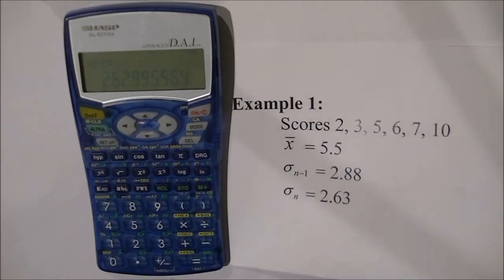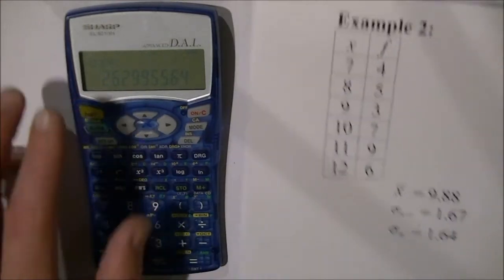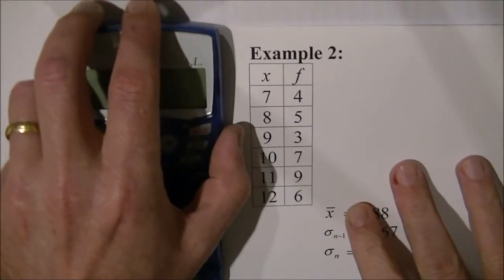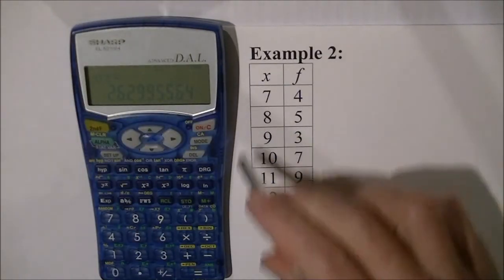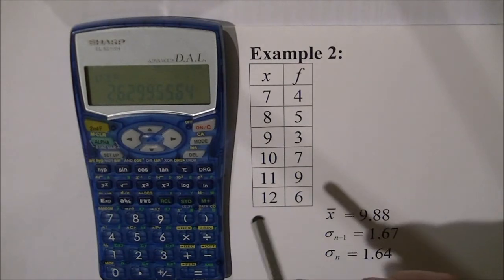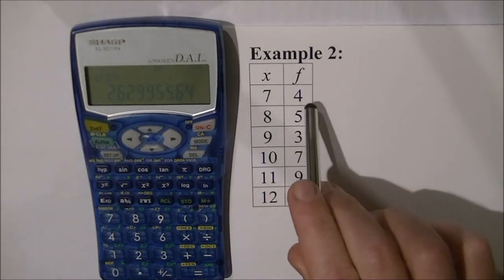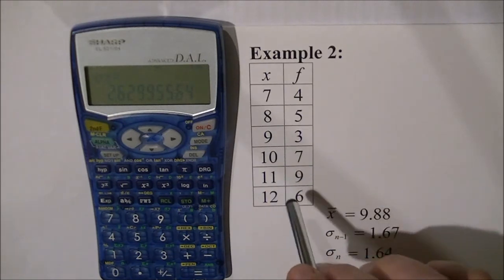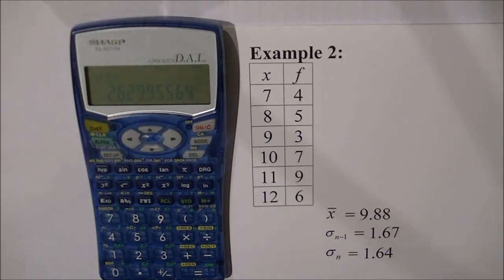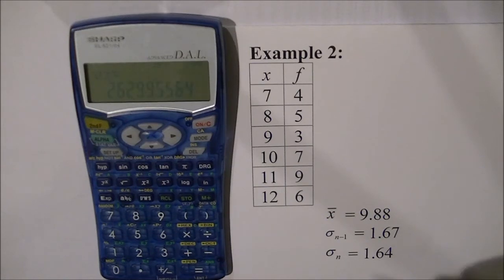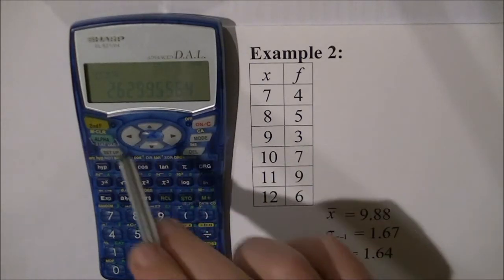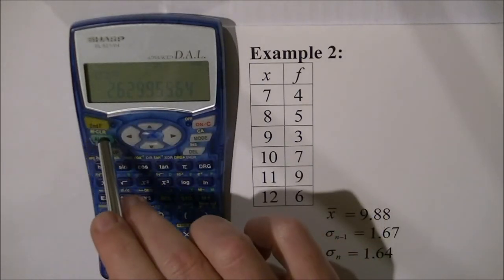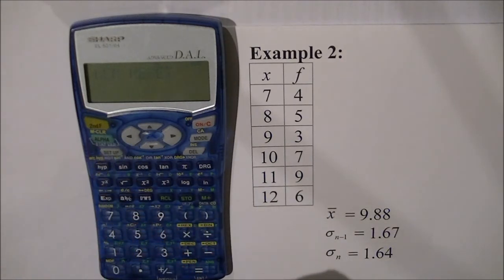For the second example what I'm going to show you is how to input information from a frequency distribution table. So instead of entering 7 four times and 8 five times and so on and pressing all of these keys I'll show you how you can compact that down. First thing we'll do is we'll clear the memory so we're going to press second F alpha zero zero and so we're back again with a cleared memory.